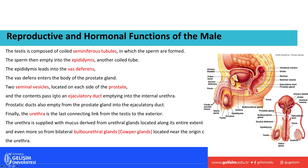The contents pass through the ejaculatory duct. There is also the bulbourethral gland, also called Cowper's gland, which produces additional fluids. Everything then empties into the urethra, which is found in the penis. In males, the urethra is the shared passageway for both semen and urine.